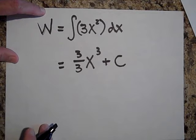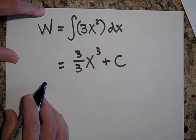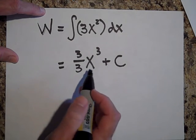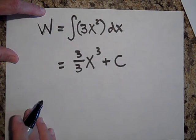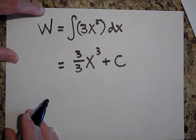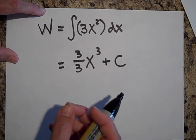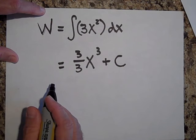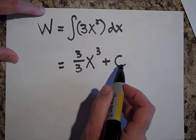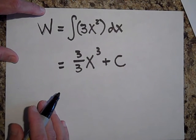And so now this will tell you how much work is done for any given amount that you move the box. We've just figured out how to figure out the work done for a varying force. It turns out that a lot of times this C will be zero. It depends on your initial conditions.